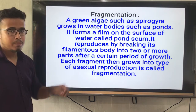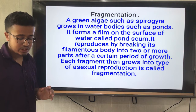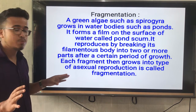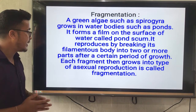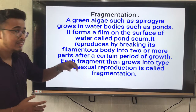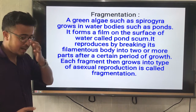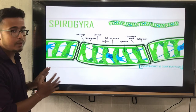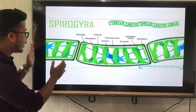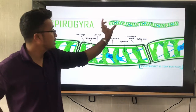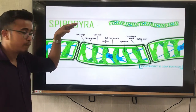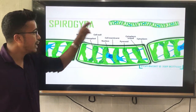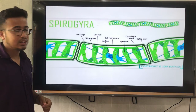Fragmentation means fragment — small pieces. Spirogyra breaks down into filamentous bodies, that means two or more filamentous pieces. After that, each fragment grows into a new type of plant. In the microscopic picture of Spirogyra algae, you can see each fragment. This fragment will break down into two or more types, and each fragment will grow into a new plant. This is called fragmentation.